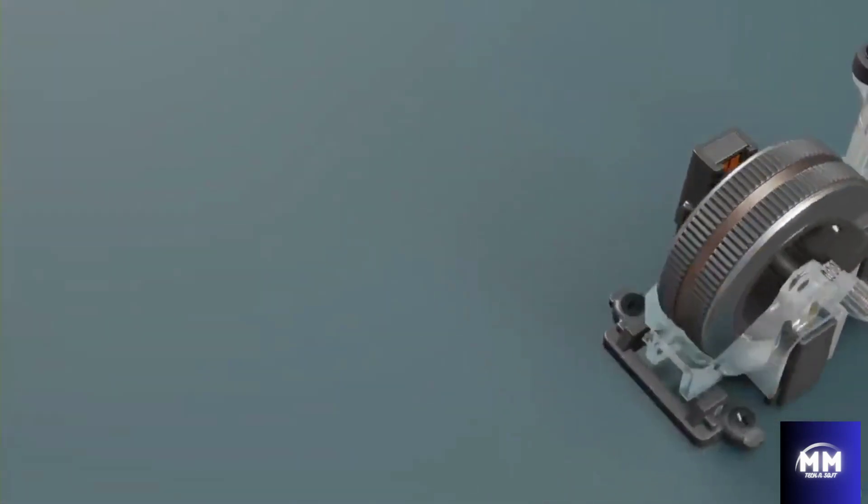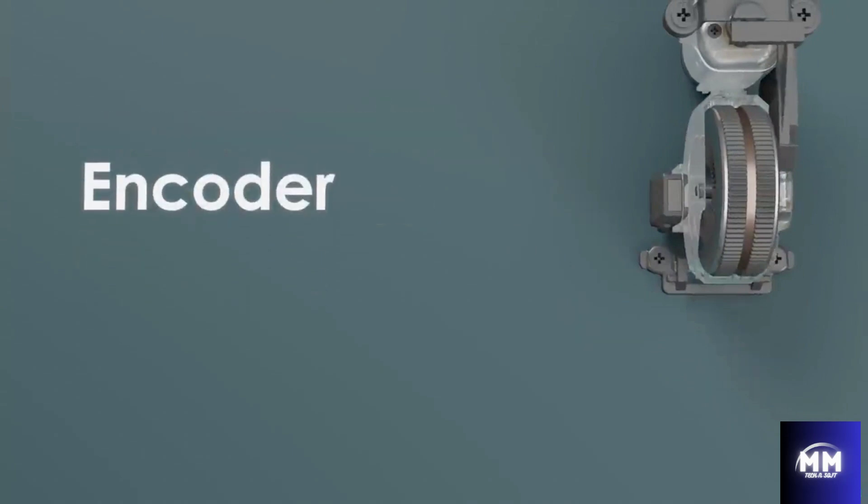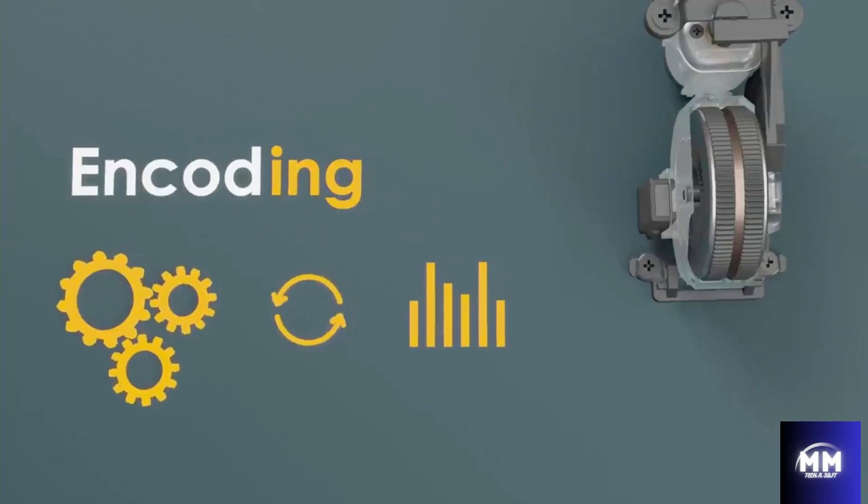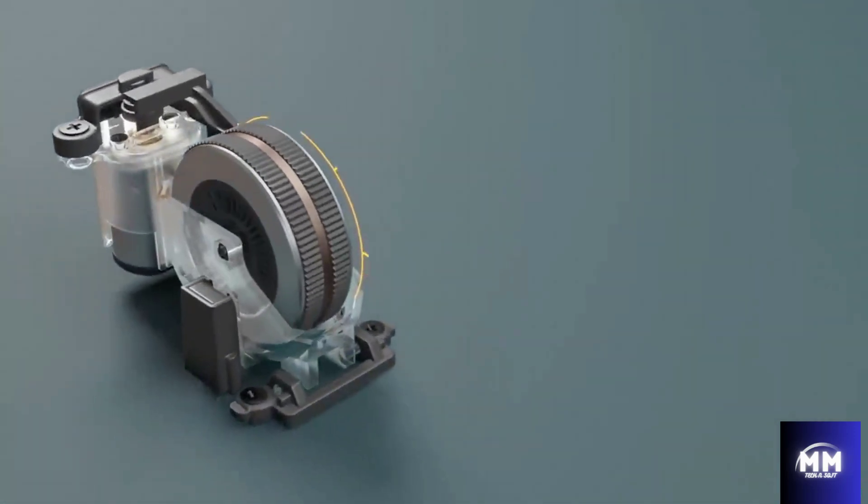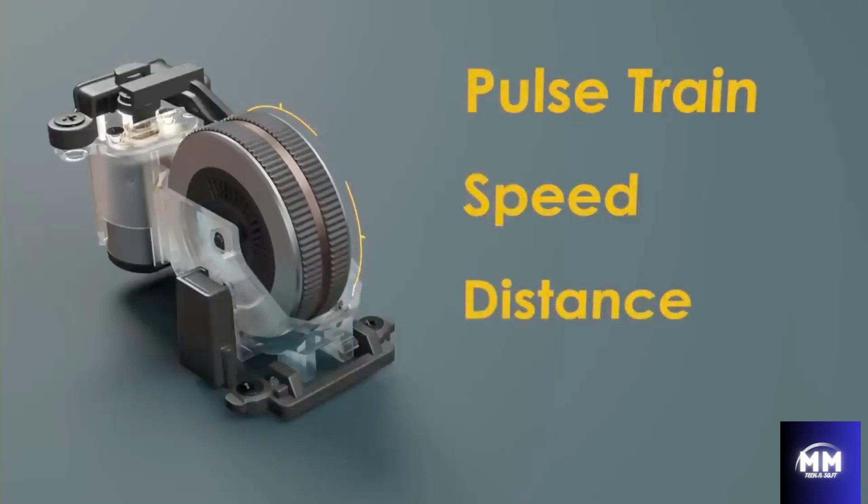By the way, this is technically called an incremental quadrature encoder. It's called an encoder because the term encoding means to convert one form of data into another form, and in this case, we're turning mechanical rotational motion first into an electrical pulse train, and then into speed, distance, and direction.